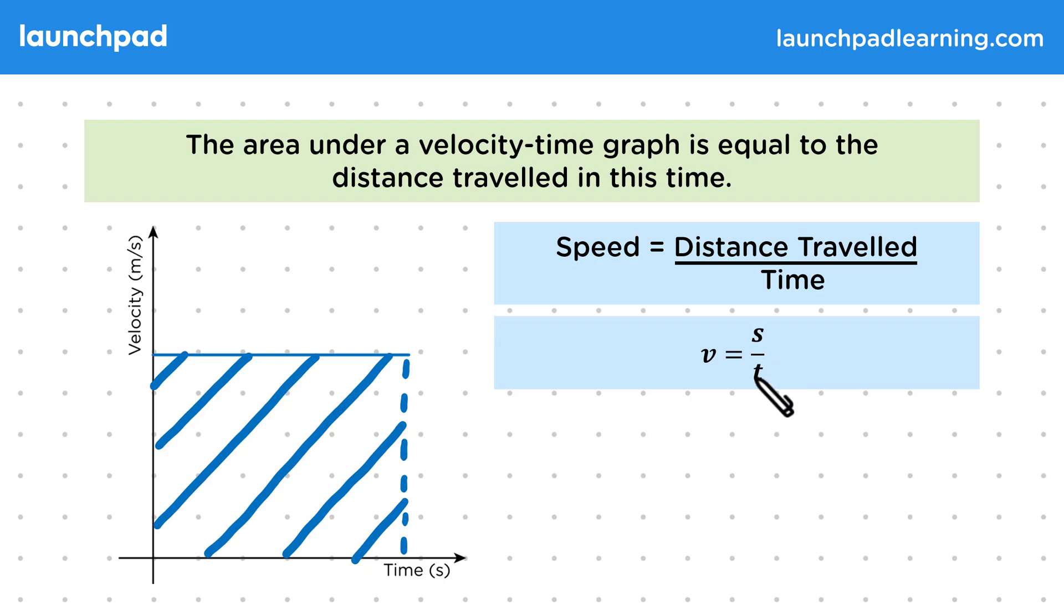If there's no change in direction, we could also say that v represents velocity. If we rearrange this by multiplying both sides by t, we get that vt is equal to s. But how does this relate to the graph?